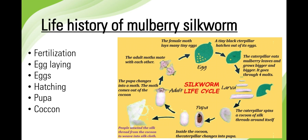Just after emergence, the male moth copulates with the female for about two to three hours. Just after copulation, the female starts egg laying, which is completed in one to twenty-four hours. One moth lays 400 to 500 eggs depending upon climate conditions. Egg laying is in the form of clusters.